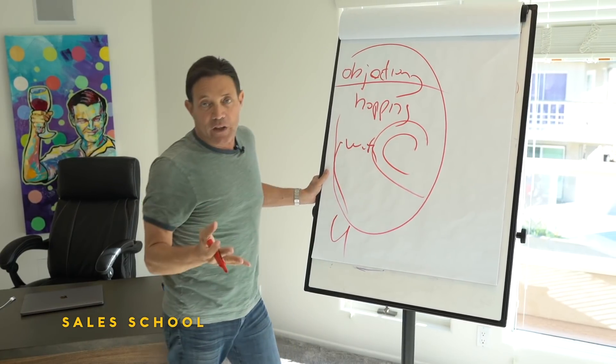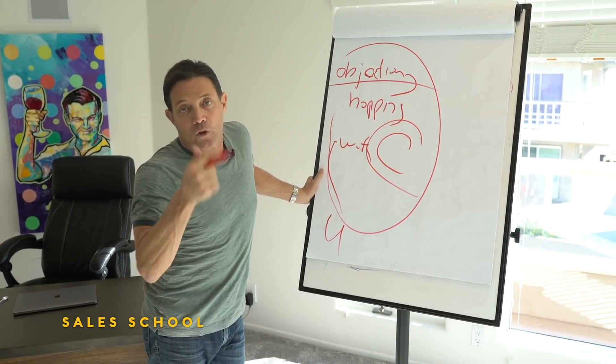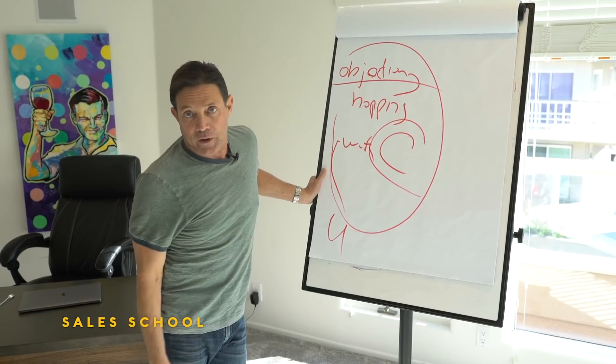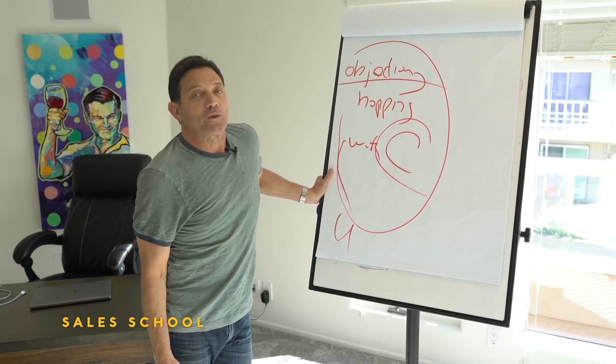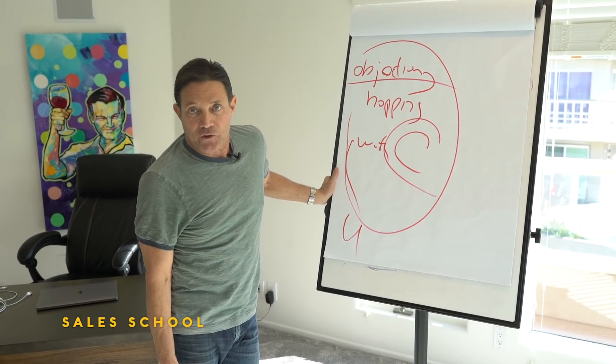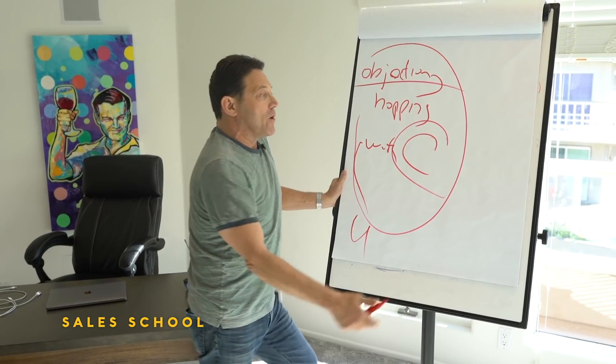In truth, all of these objections are really smoke screens for a lack of certainty. You haven't had a high enough level of certainty for either one, two, three, or all three of the three tens, or perhaps you're dealing with someone with an incredibly high action threshold.